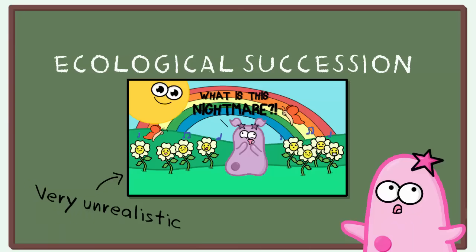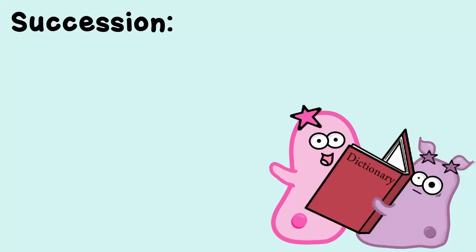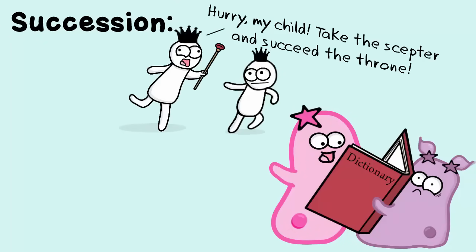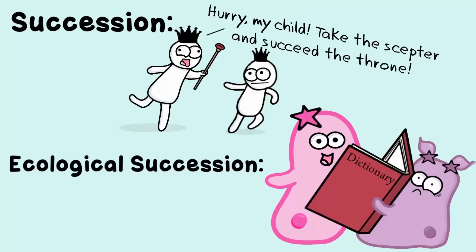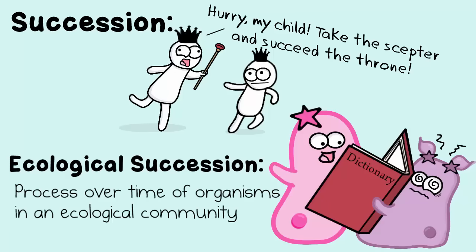It's not really that fast in real life. Most dictionaries define succession as the following of a person or a thing after another in an order or a sequence. Well, ecological succession is that, but in terms of ecology. Ecological succession is a process over time of organisms in an ecological community.